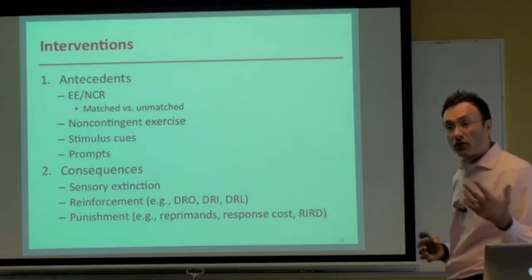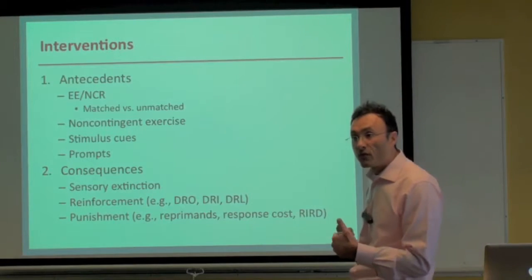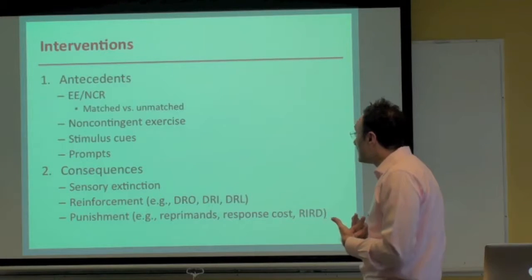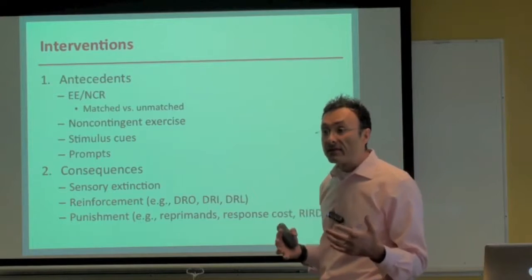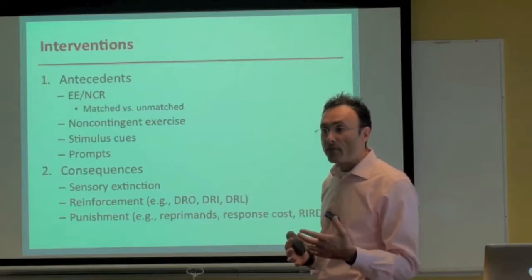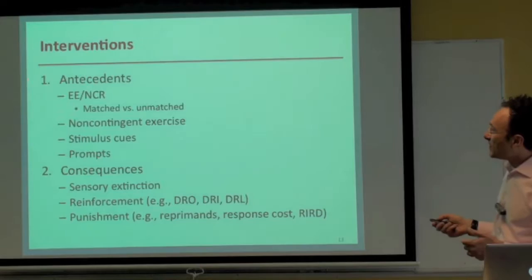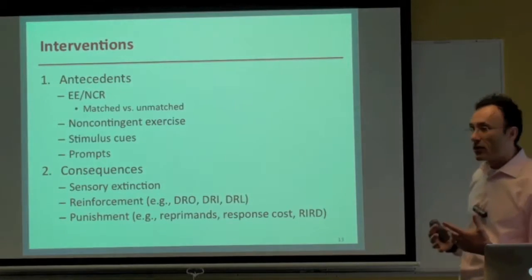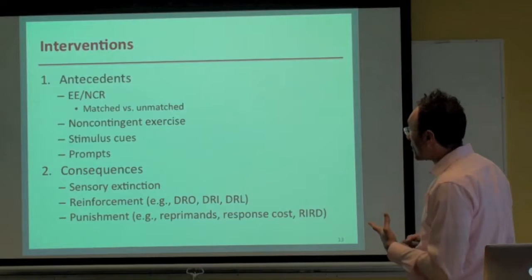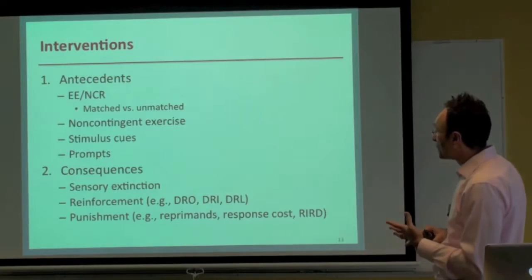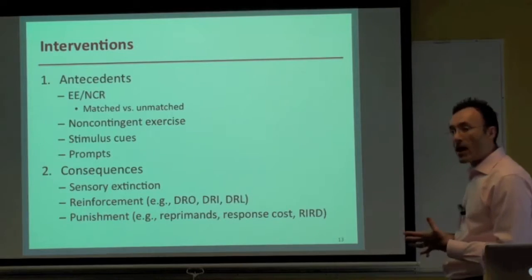Differential reinforcement options include DRO — differential reinforcement of other or zero behaviors — DRI — differential reinforcement of incompatible behaviors — and DRL — differential reinforcement of low rates — when at least some instances of the problem behavior can be tolerated. Just as environmental enrichment has the lion's share of antecedent research, what has the lion's share of consequence research is punishment, specifically reprimands, response cost, and RIRD.